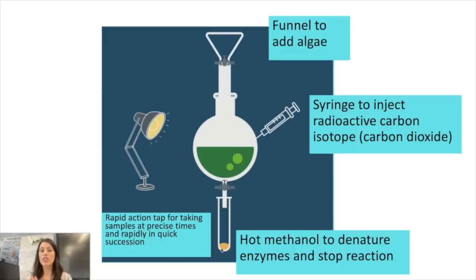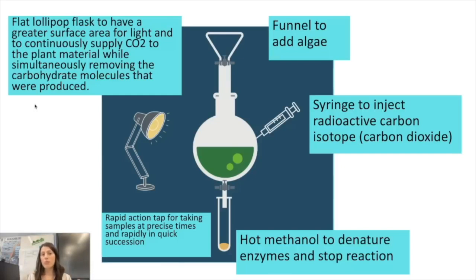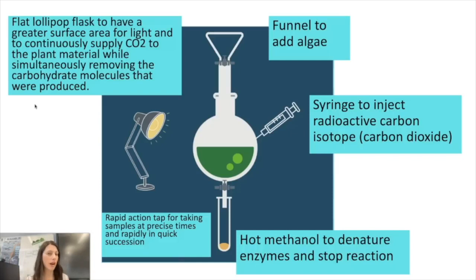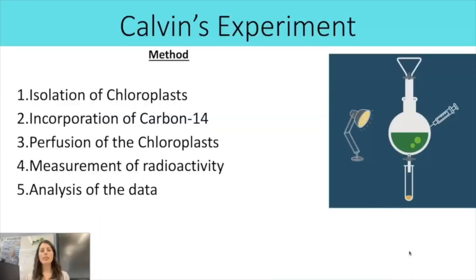The advantages of the flat lollipop flask are: because it is flat on two sides, there is a larger surface area so more algae are exposed to light, making the rate of the light-dependent reactions faster and changes more visible. You can also simultaneously inject carbon dioxide and take samples at the same time. The method itself wouldn't be expected to be memorized — it's a common application question where you'd be given the method and asked to explain certain stages.